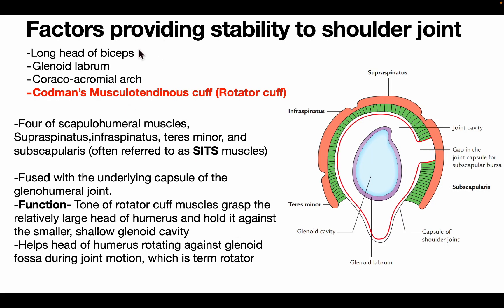Factors providing stability to the shoulder joint include the long head of biceps, glenoid labrum, coracoacromial arch, and the musculotendinous cuff — also known as the rotator cuff. The rotator cuff is formed by four SITS muscles: supraspinatus, infraspinatus, teres minor, and subscapularis. The tendons of these four muscles fuse with the underlying capsule of the glenohumeral joint. The rotator cuff grasps the relatively large humeral head and holds it against the smaller, shallow glenoid cavity, and helps the head rotate against the glenoid fossa during motion.